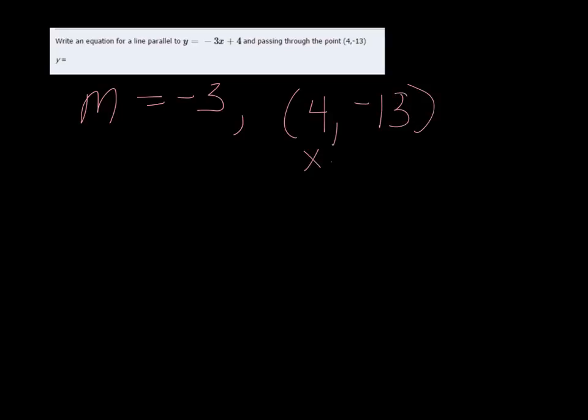So this would be my x1 and this would be my y1, and I just use the point-slope formula. y minus y1, so it would be negative 13, is equal to negative 3.